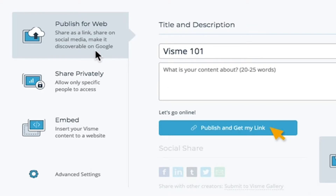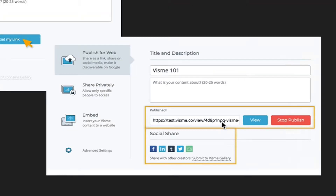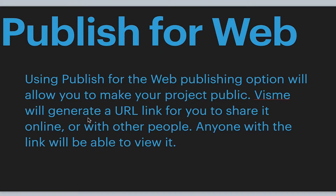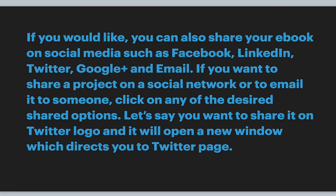Let's say you want to Publish for Web because you want to utilize it on social media — everybody's on social media nowadays. You can get this link, publish it, grab that link, and share it on the web. Using the Publish for Web option makes the project public, and Visme generates a link you can share online or on your social media profile — Facebook, LinkedIn, Twitter, Google+, email.